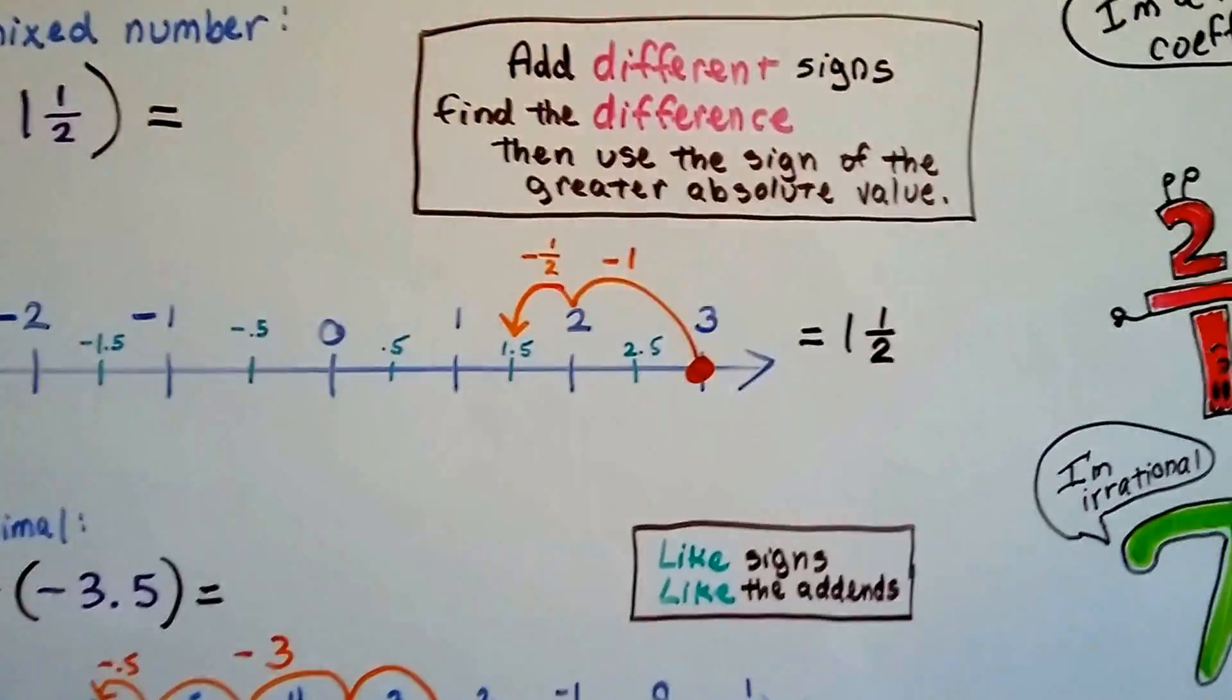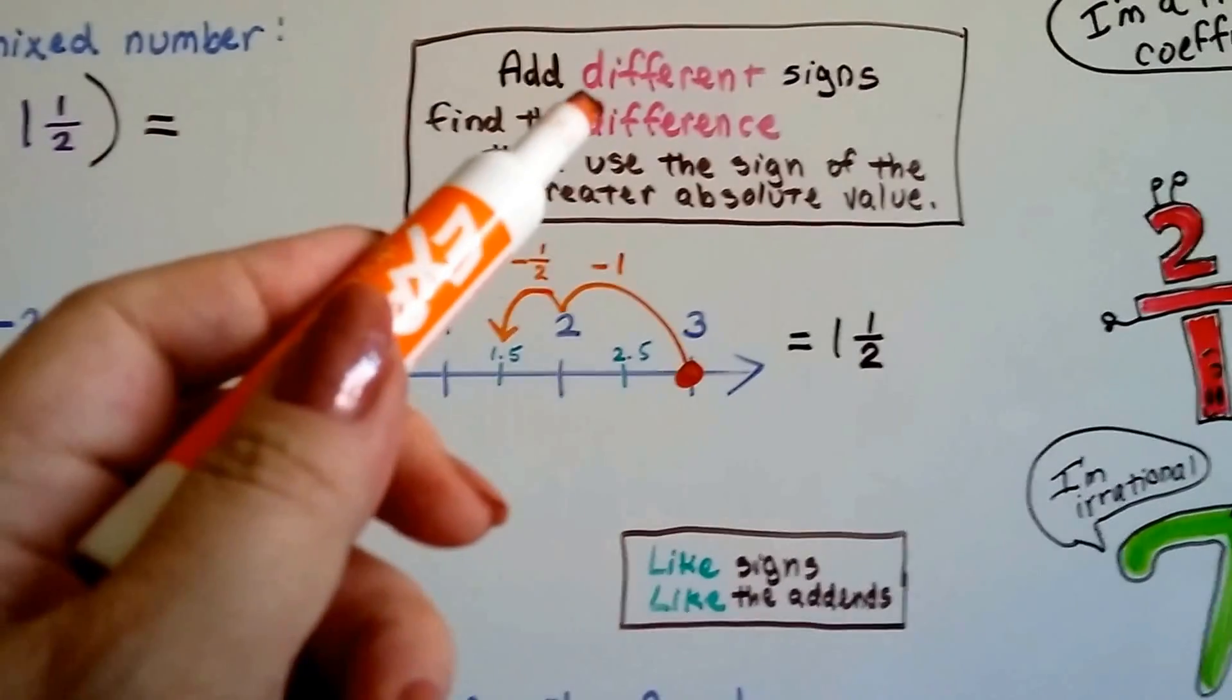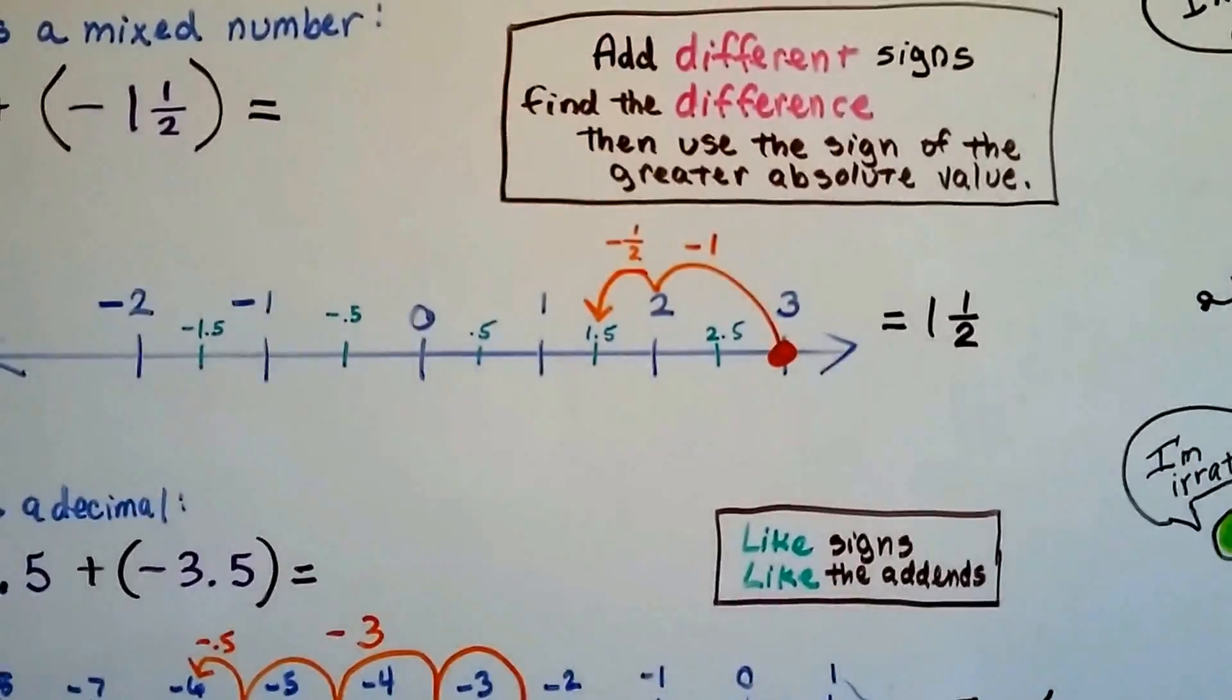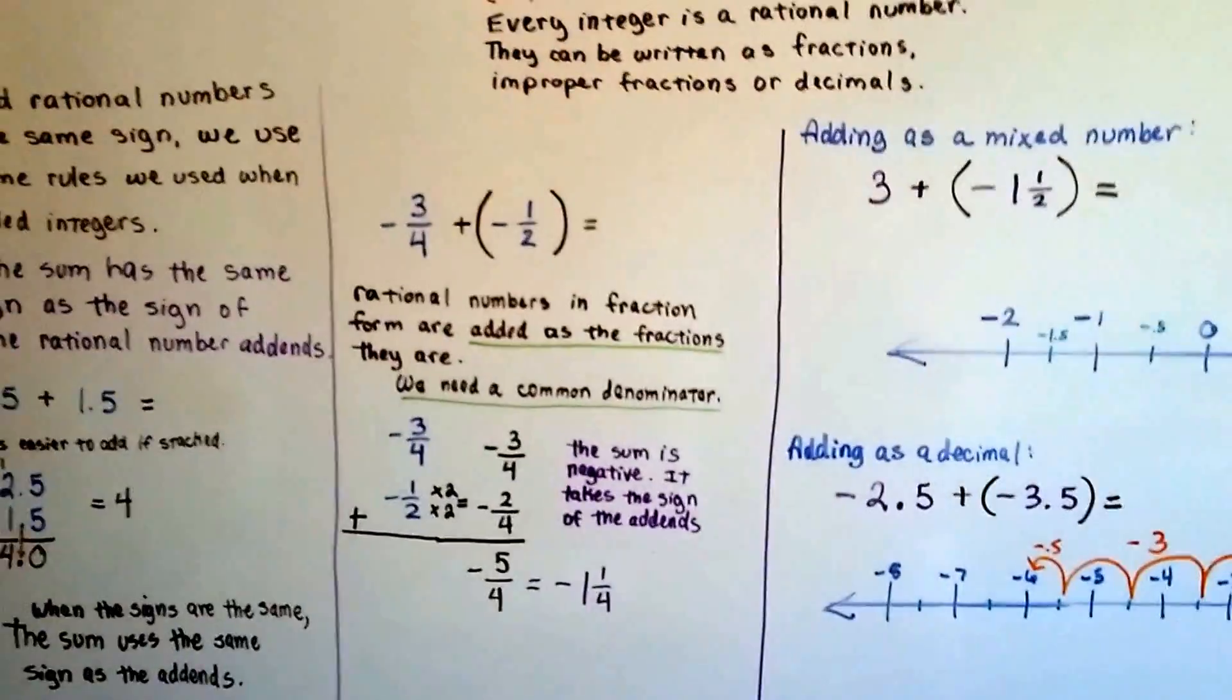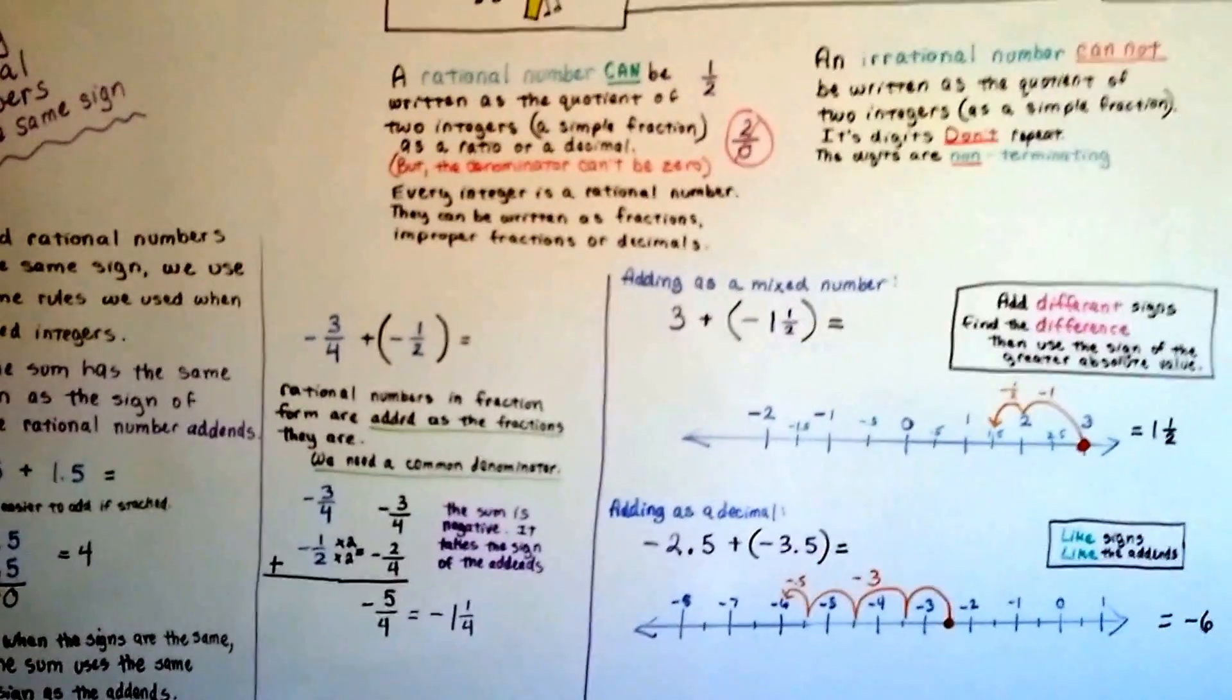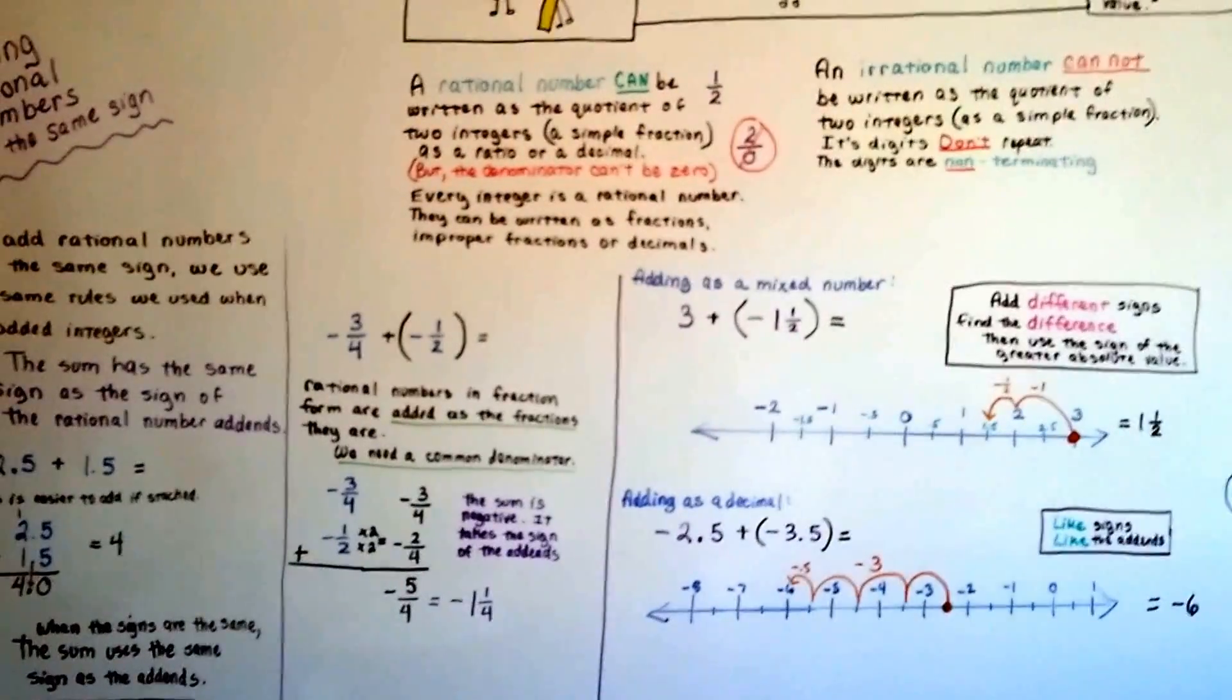So try to remember, like signs, like the addends. Add different signs, find the difference, and use the sign of the greater absolute value when you're doing this one with the different signs. We're going to talk about adding rational numbers with different signs in our next video. I'll see you there. You're doing great. Keep going. You'll make it. Bye.